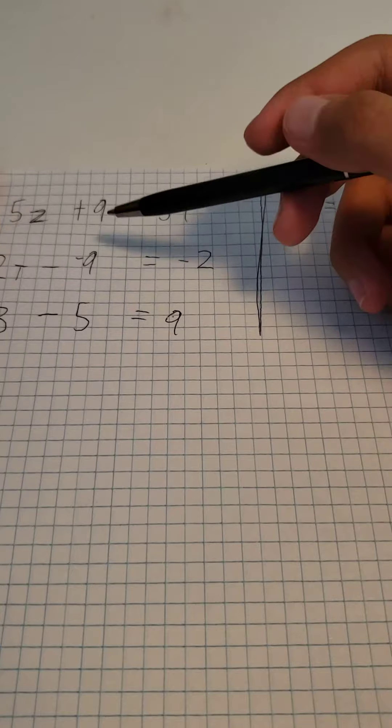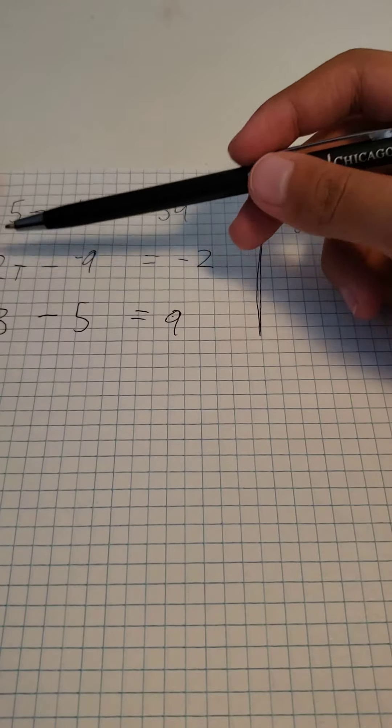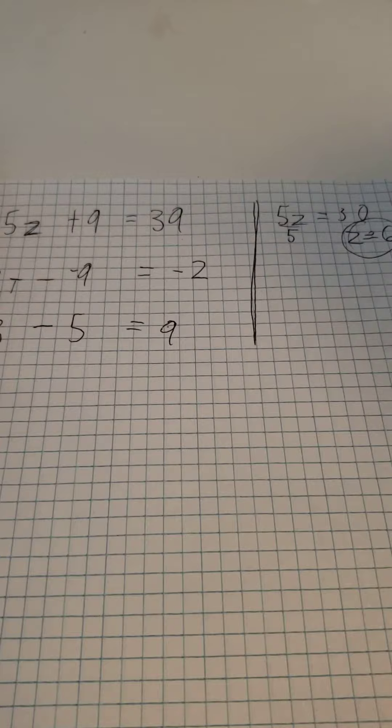Next up, it's a little bit more complicated. 2t minus negative 9 equals minus 2.